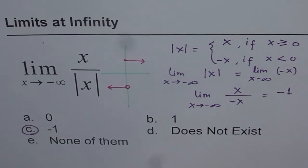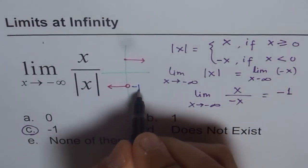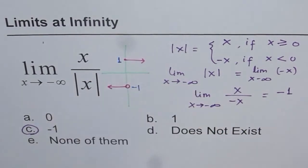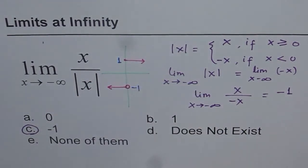And that also gives you the answer as minus 1. Do you see that? This is another way of looking at the same thing. What you can do is plot the graph. As you approach negative infinity, you can see you are always at minus 1 and you are approaching minus 1 only. So minus 1 is the correct answer.